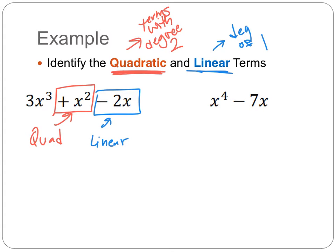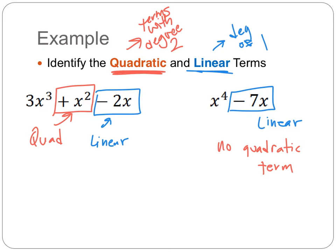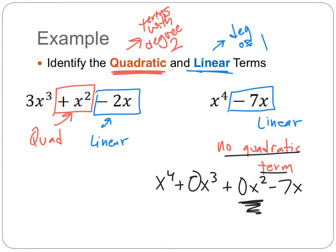In the next example, we have x⁴ − 7x. The −7x is our linear term since it has degree 1. If we notice, there's nothing else, so there is no quadratic term. We could note that the quadratic term is just 0, but for this instance, there is simply no quadratic term. These two examples show us how to identify quadratic and linear terms based on their degree.